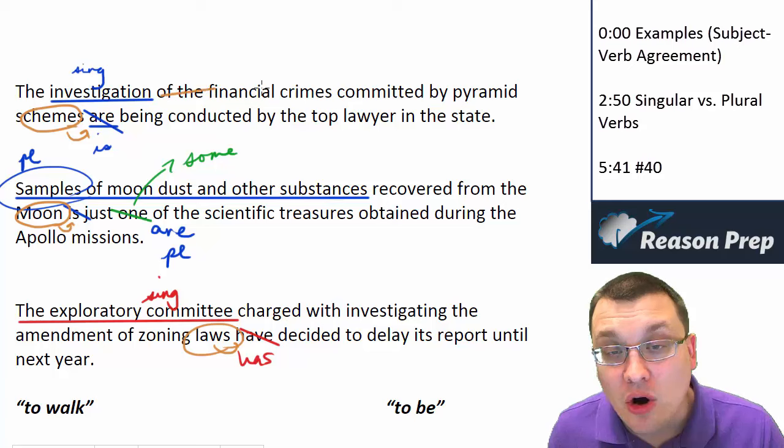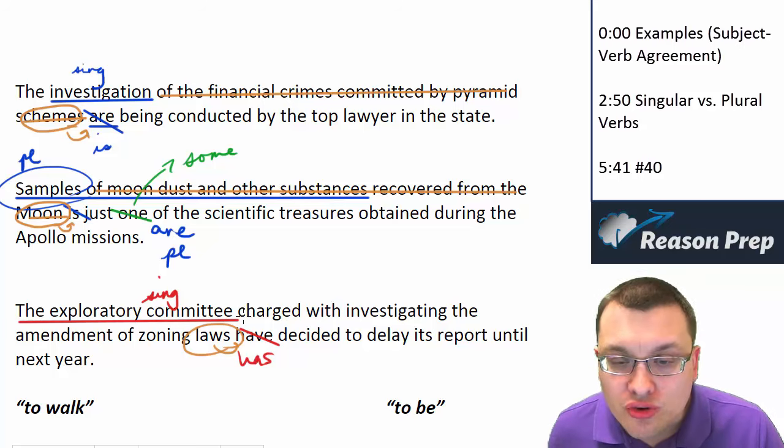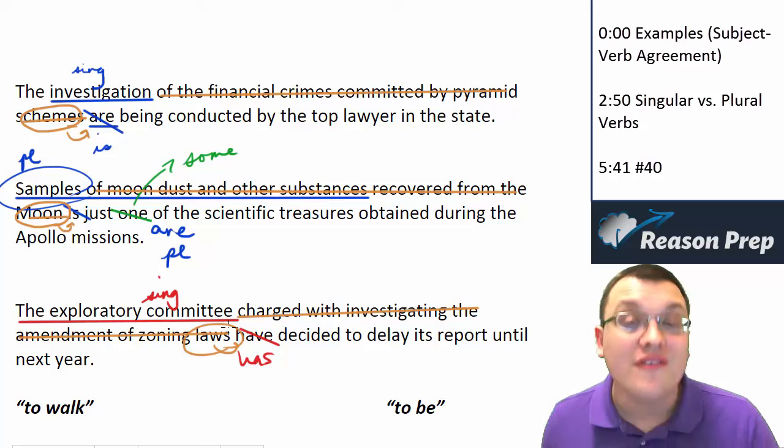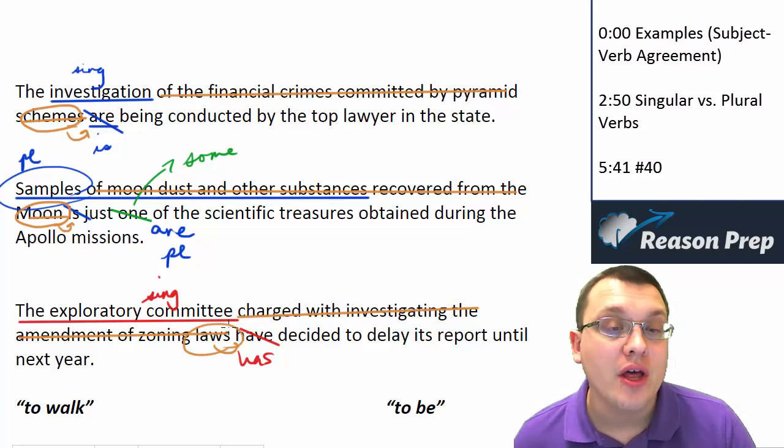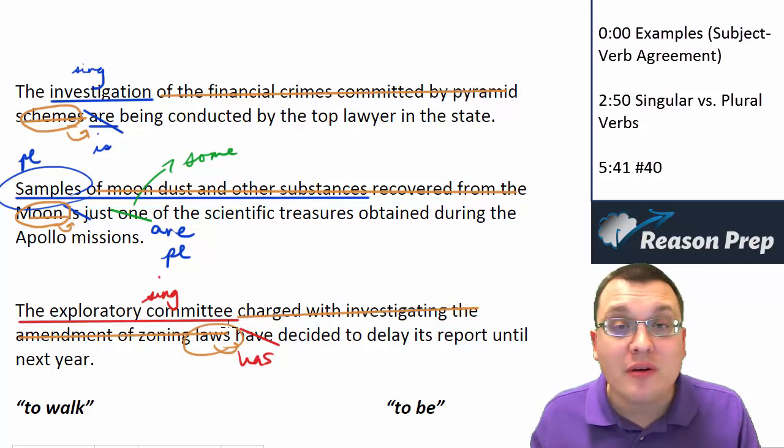But the problem is they put in all this extra junk in the sentence to make you lose track of the connection between the subject and the verb. So you have to just keep in mind, here's my subject, here's my verb. There might be some stuff in between, but they still have to be linked in terms of number.